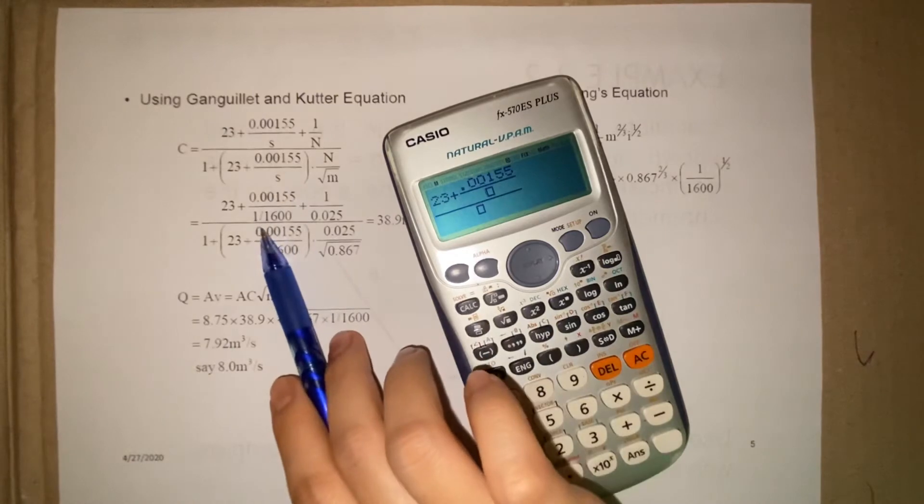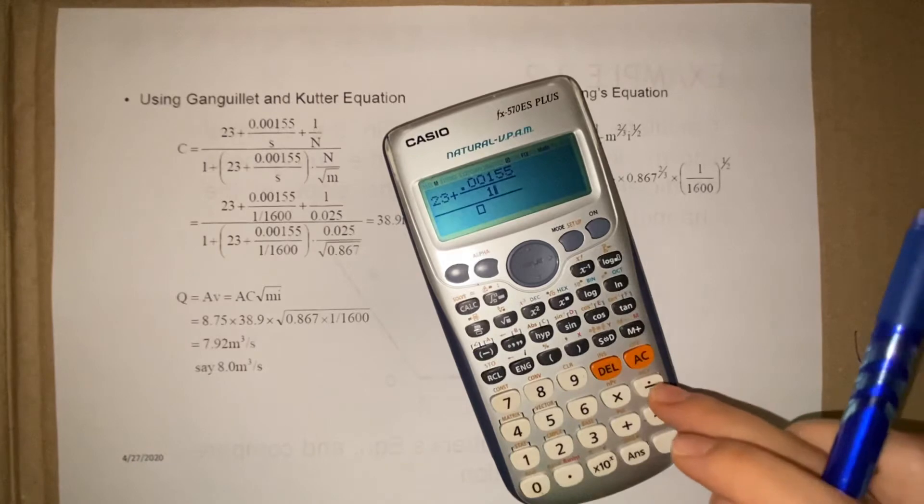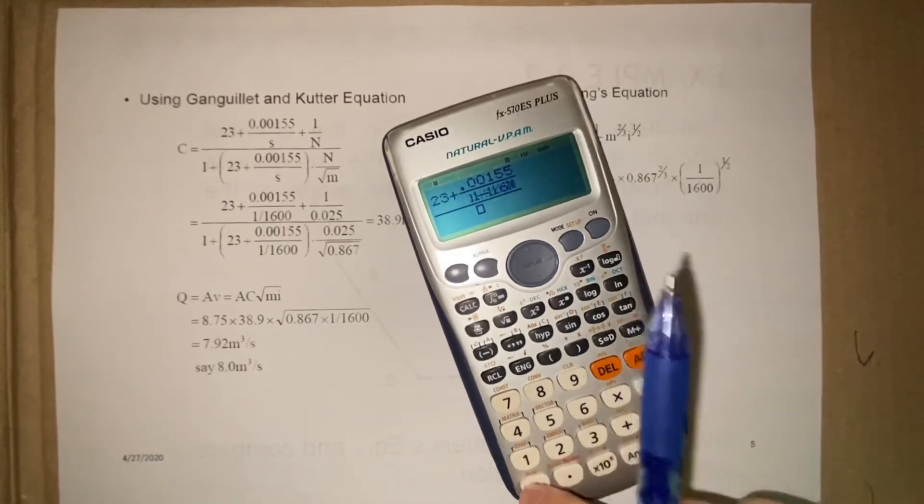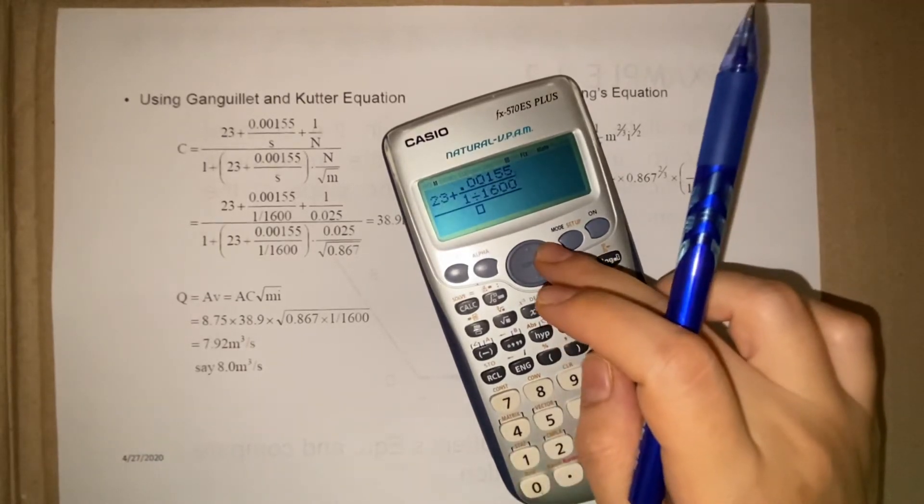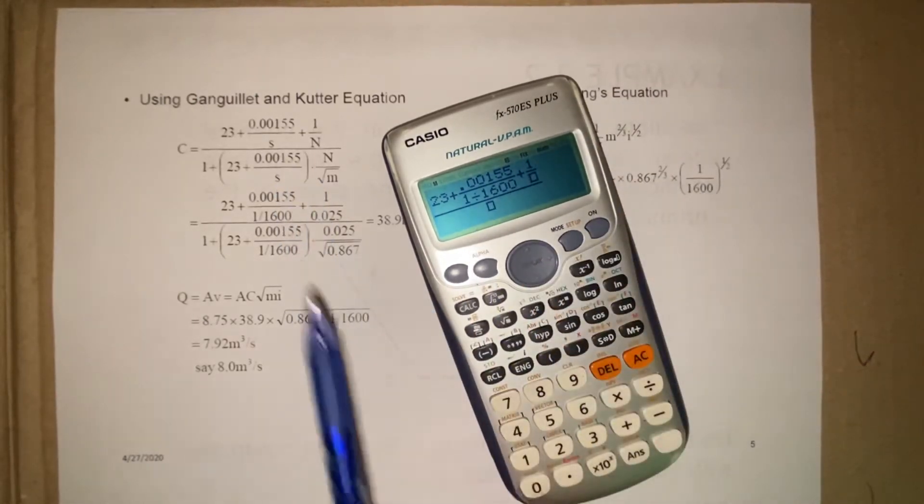As given is 1 over 1600, so 1 over 1600. And then plus 1 over N, whereby N is given 0.025.